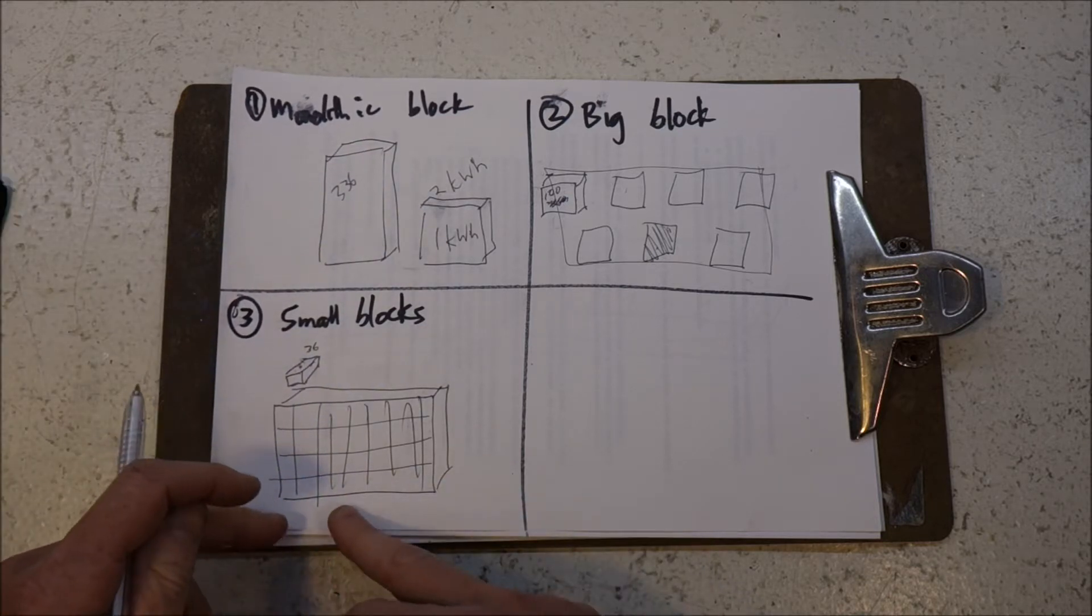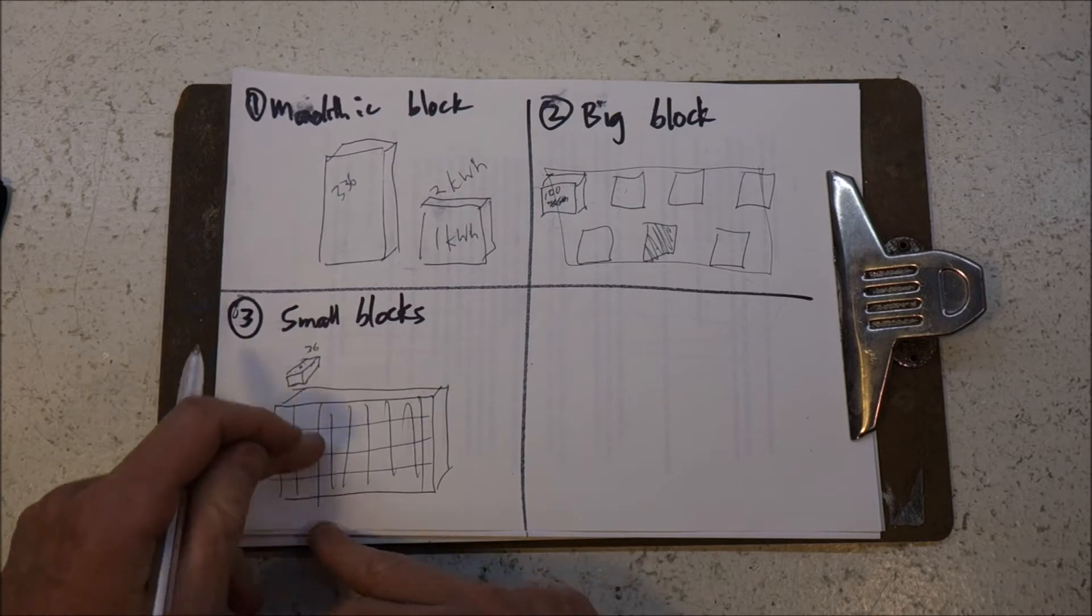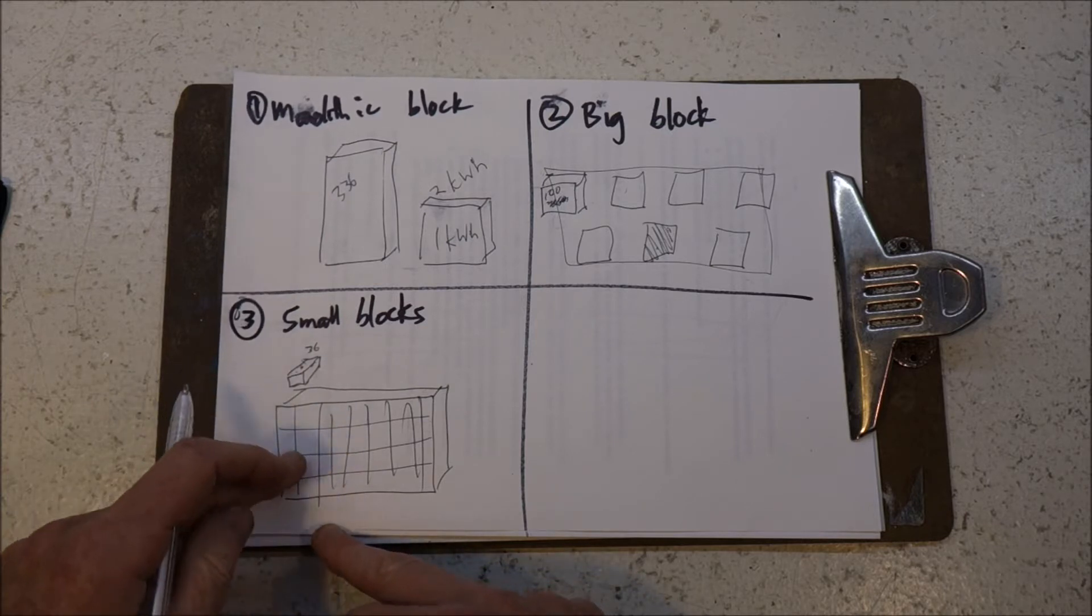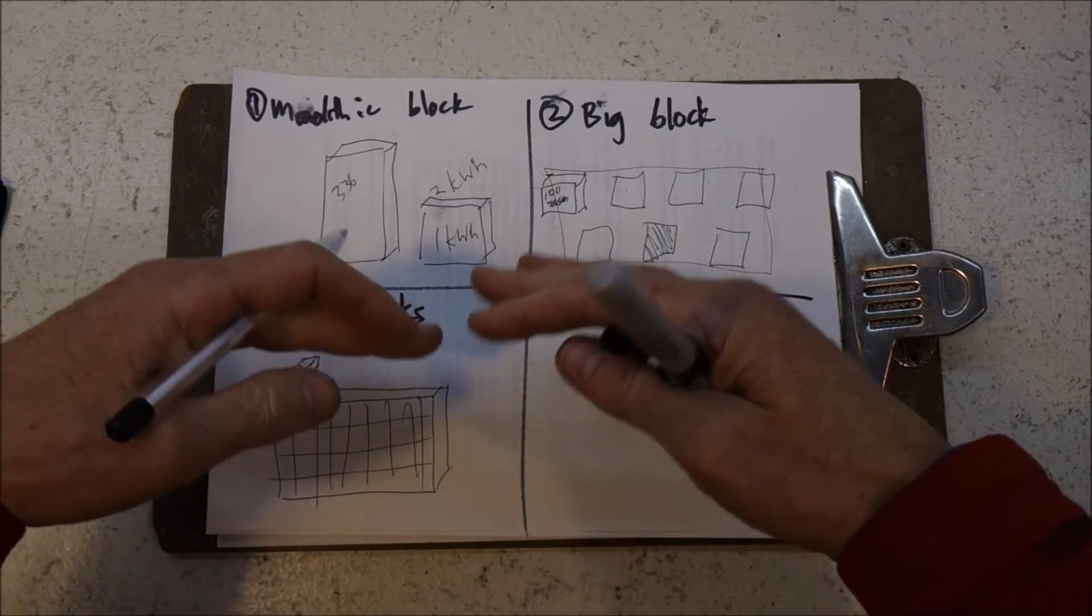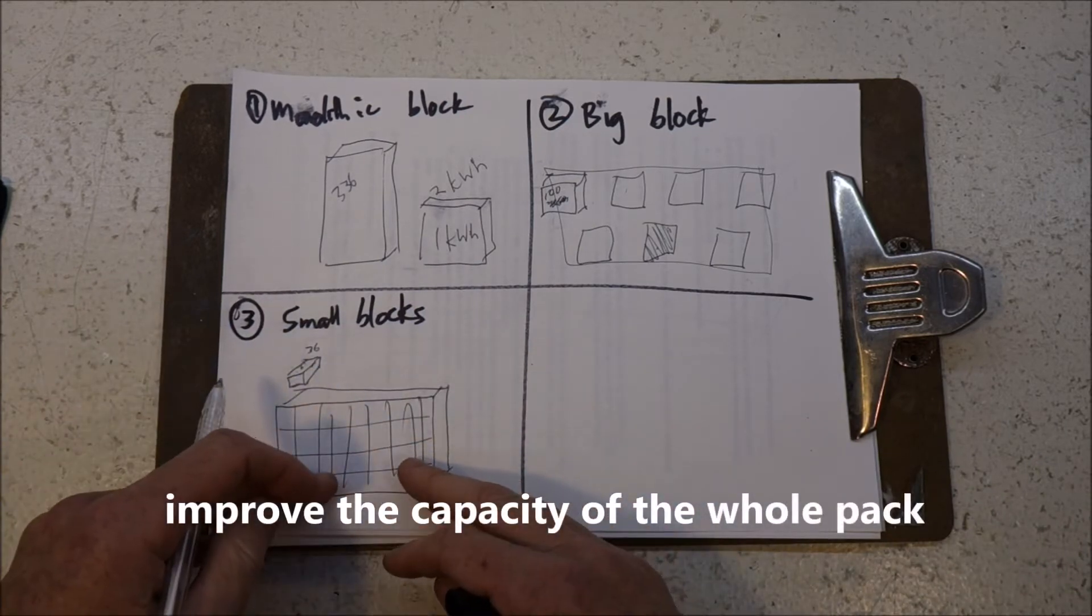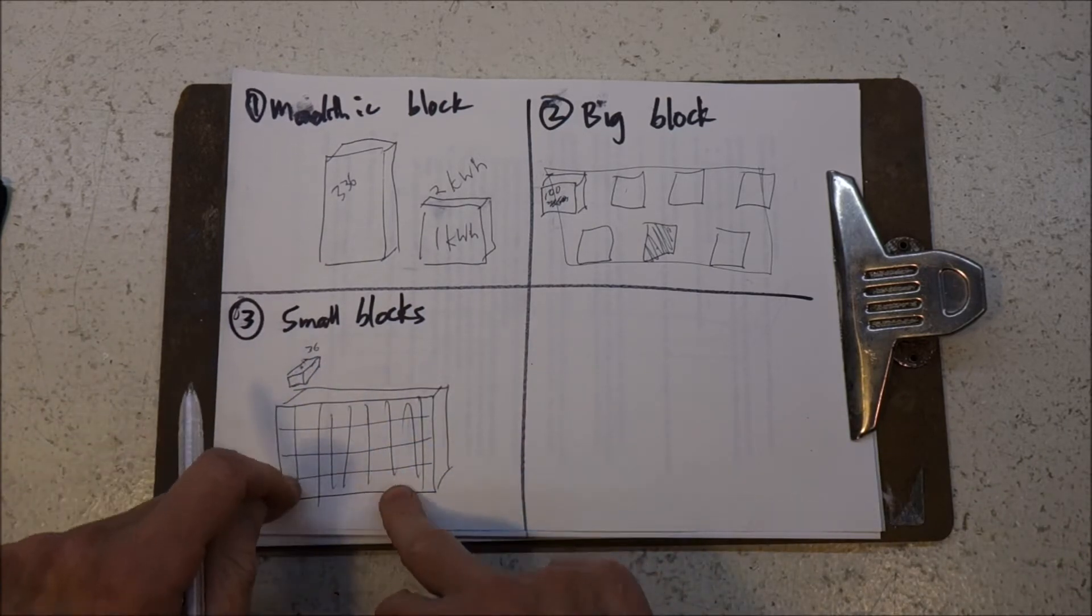And you can incrementally increase the capacity by building new small blocks that have better capacity. And you can just swap out the lowest capacity block and slam in a new higher capacity block and you slowly incrementally improve the capacity of the block. So that is quite nice.